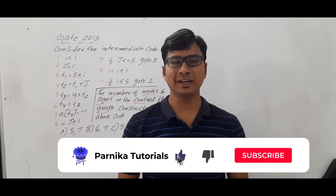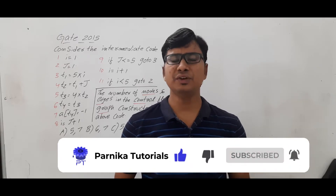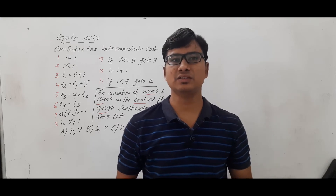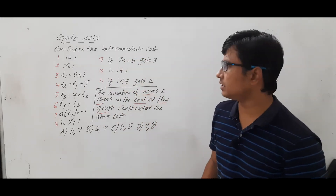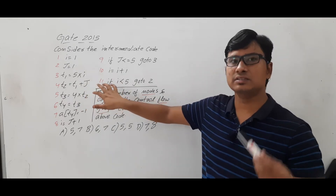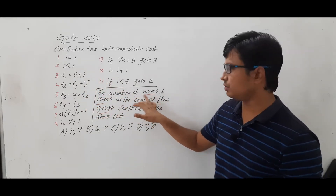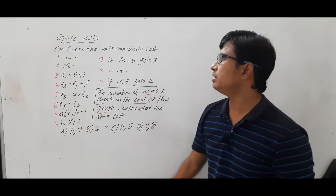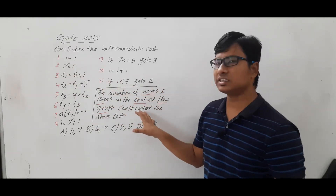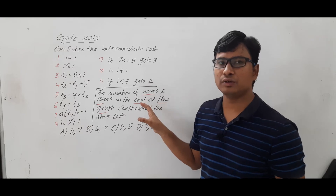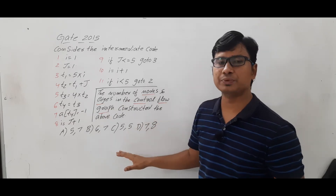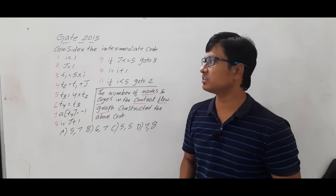Good morning friends, welcome to Parnika's Tutorials YouTube channel. In this video I want to discuss one of the GATE questions which came in the year 2015. First let me read out the question, then I will discuss the solution with you. Consider the intermediate code — they have given 11 lines of intermediate code. The number of nodes and edges in the control flow graph constructed on the above intermediate code. We need to solve this question and find the right option.